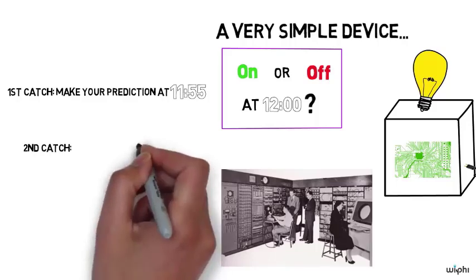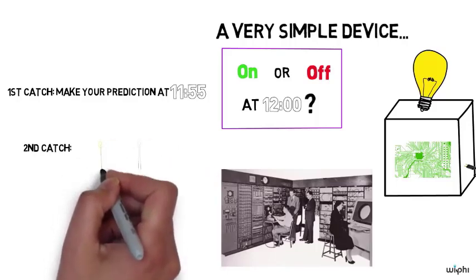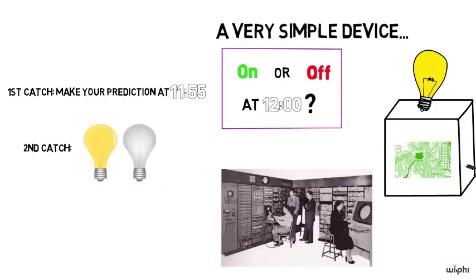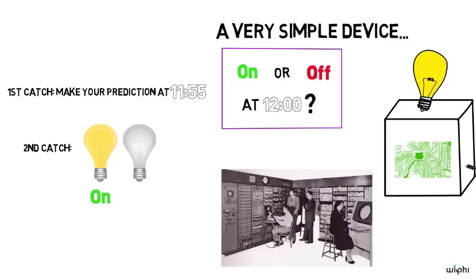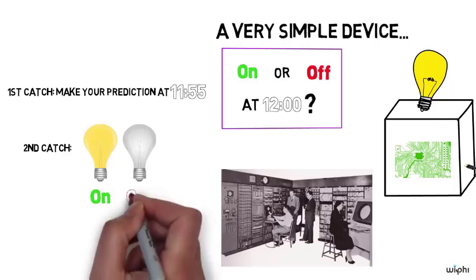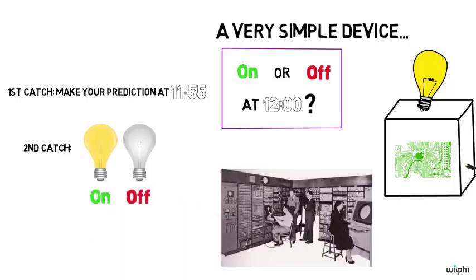Secondly, you have to make your prediction by putting on a light bulb of your own, which is quite close to my light bulb on my box. If you put that light bulb on, then that's an indicator that you believe the light bulb on the box will be on at noon. If you leave it off, that's an indicator that you believe the light bulb will be off on the box at noon. So that's the challenge.